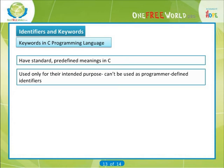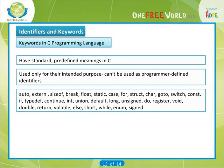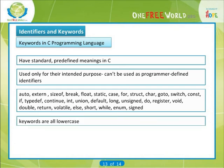The standard keywords are: auto, extern, sizeof, break, float, static, case, for, struct, char, goto, switch, const, if, typedef, continue, int, union, default, long, unsigned, do, register, void, double, return, volatile, else, short, while, enum, signed. Some compilers may also include some or all of additional keywords. Note that the keywords are all lowercase.